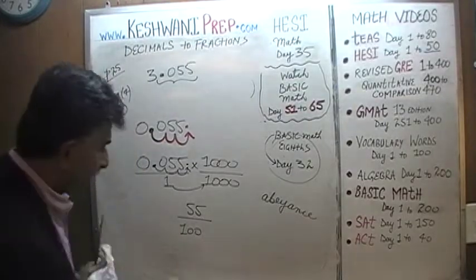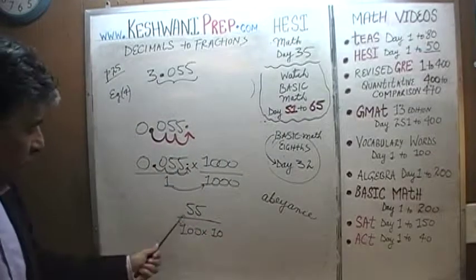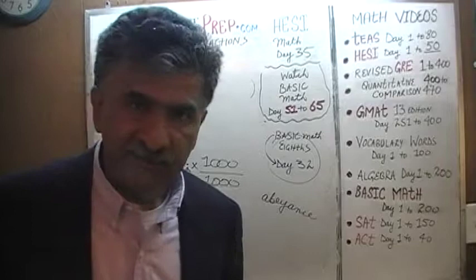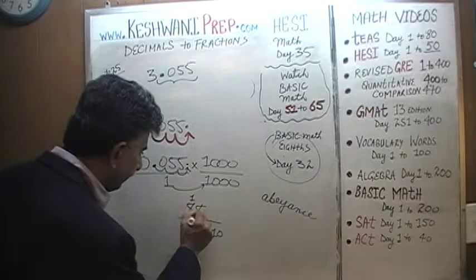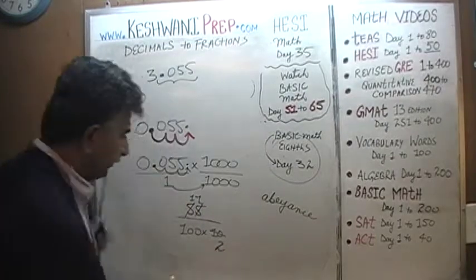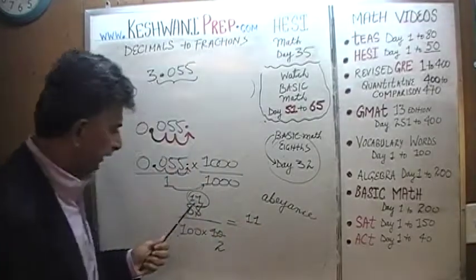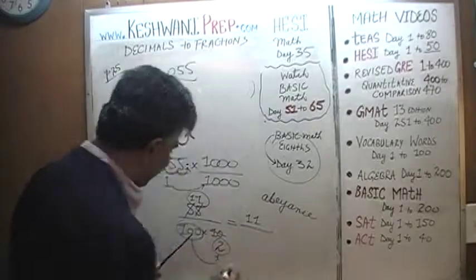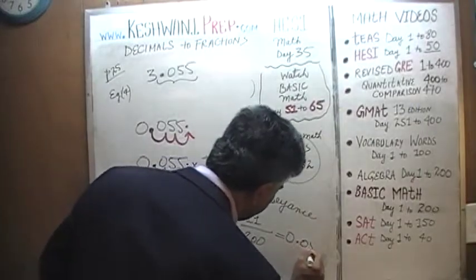Let's not write one thousand as one thousand — let's write it as one hundred times ten. One hundred times ten is still a thousand, and this makes it easier to reduce. The common factor between the top and the bottom is five. Let's divide top and bottom by five: fifty-five divided by five is eleven, and ten divided by five is two. So we end up with eleven over one hundred times two, which is two hundred. Eleven over two hundred — which is the same as 0.055.